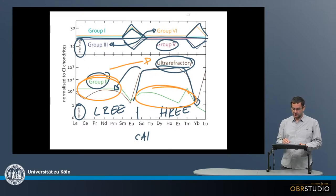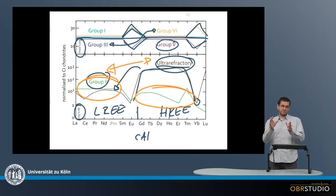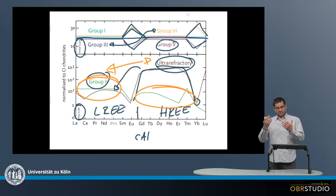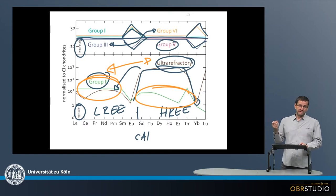So there's a certain complementarity maybe in group 2 and ultra-refractories where the ultra-refractory components form, and then these are removed. The heavy rare earth elements are removed from a gas, it is depleted in the heavy rare earth elements, and these are then incorporated in some other objects forming the group 2 pattern. This is one way to explain this.